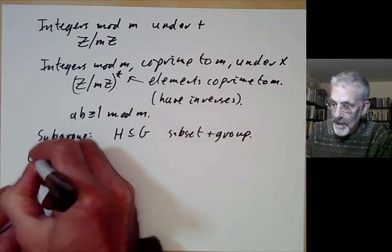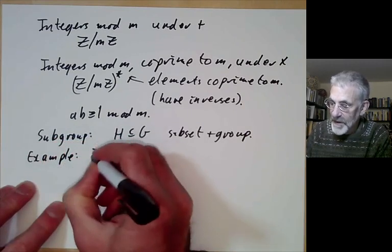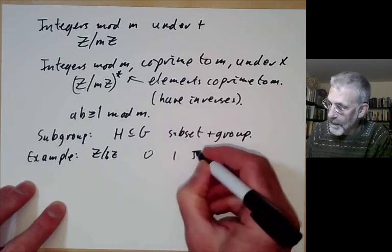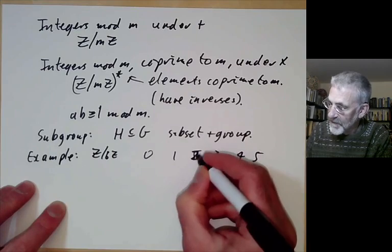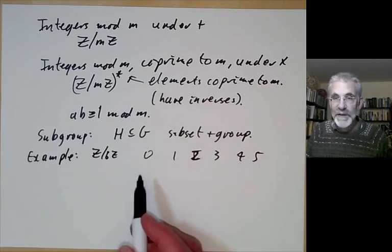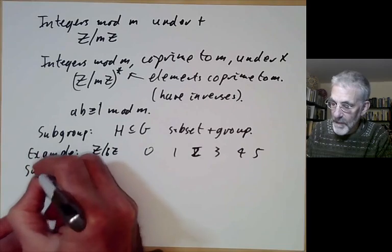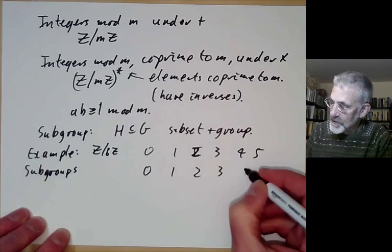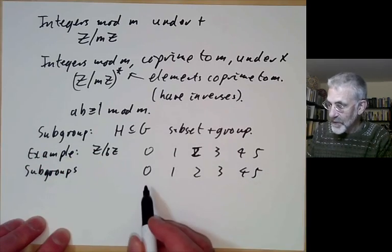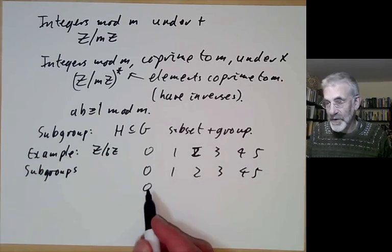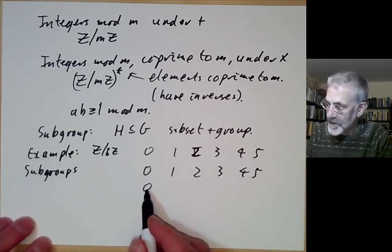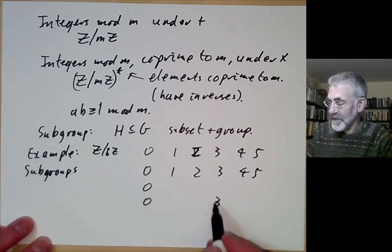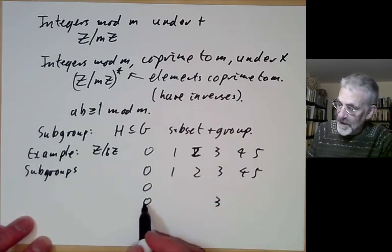For example, let's take the group of integers modulo 6. We can think of this as having elements 0 up to 5. Let's look at what possible subgroups there are. One obvious subgroup is just the whole group. Next, we could take just the 0 element — that forms a group, although not a terribly interesting one. Next, we could take the elements 0 and 3, because 3 plus 3 gives us 0 again.